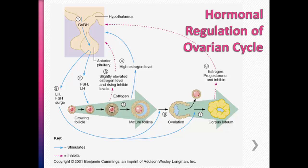As the dominant follicle continues to develop, it releases more and more estrogen. At some point we reach a critical level of estrogen, which stimulates the release of FSH and particularly LH. With a surge in LH, you get ovulation — the secondary oocyte is released from the follicle. The follicle then becomes the corpus luteum, which is in charge of producing estrogen, progesterone, and inhibin.